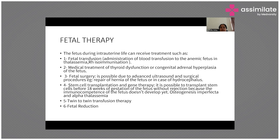Stem cell transplantation and gene therapy have also started. It is possible to transplant stem cells before 18 weeks of gestation without rejection because the immunocompetence of the fetus has not yet developed. This procedure must be done before 18 weeks; once immunocompetence develops, it becomes like an adult transplant and rejection becomes a problem. This is done in cases of osteogenesis imperfecta and alpha thalassemia.